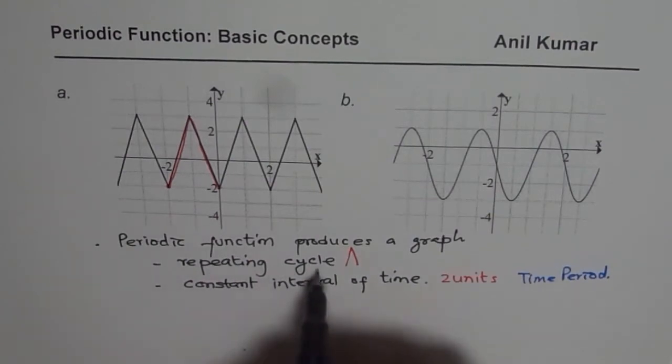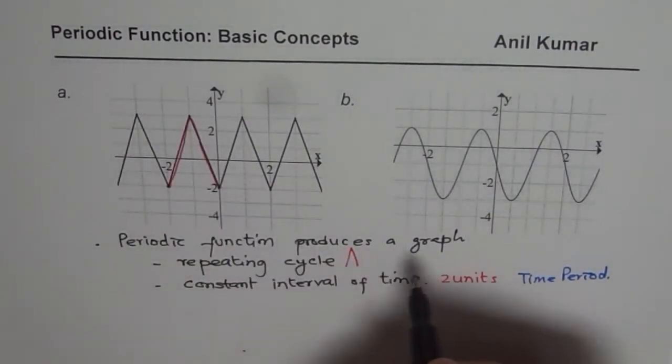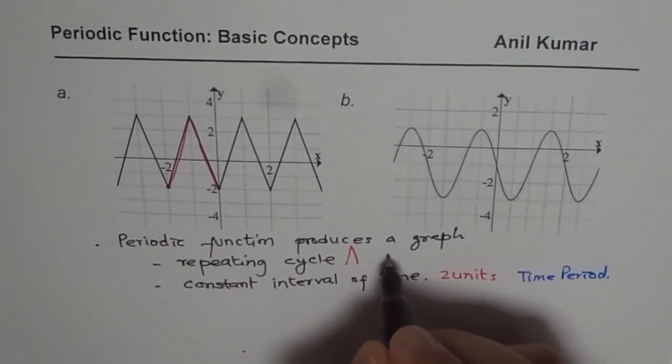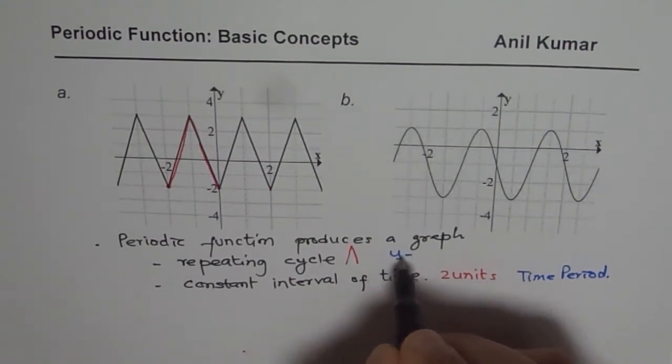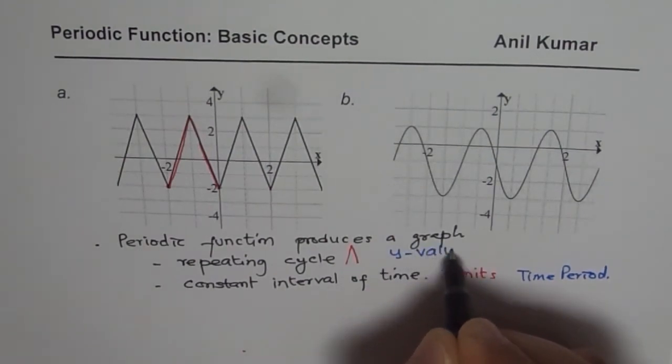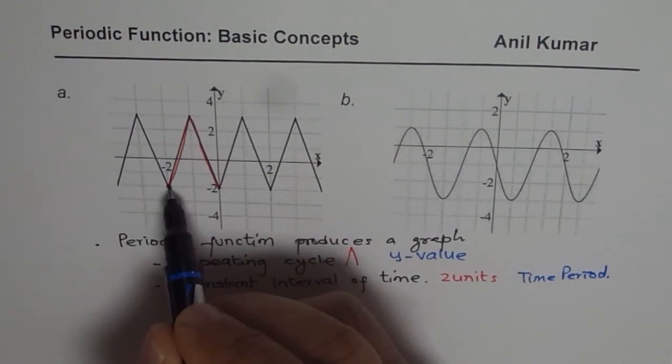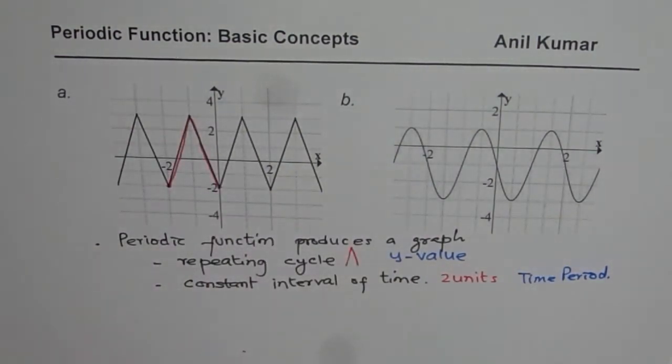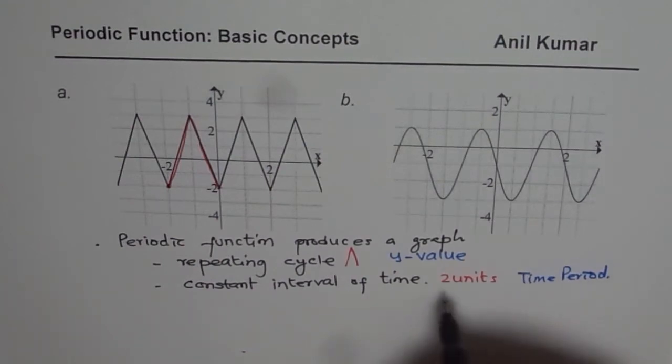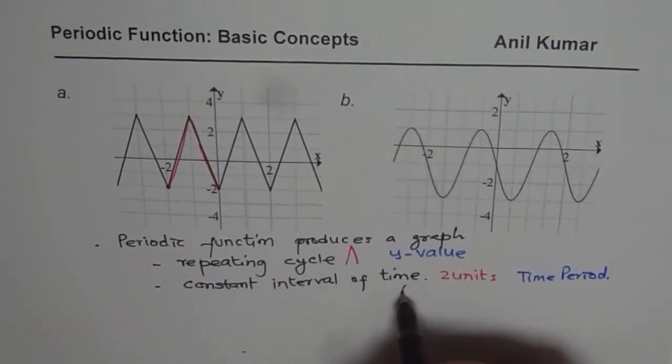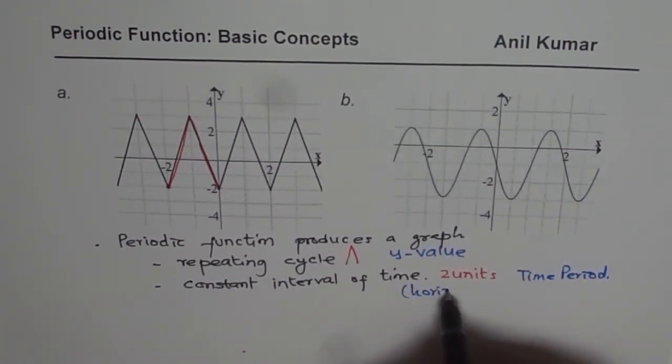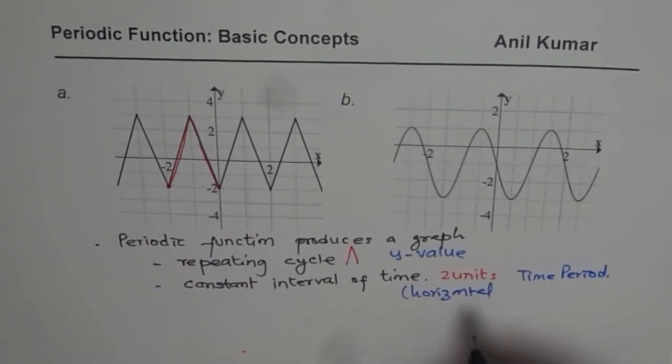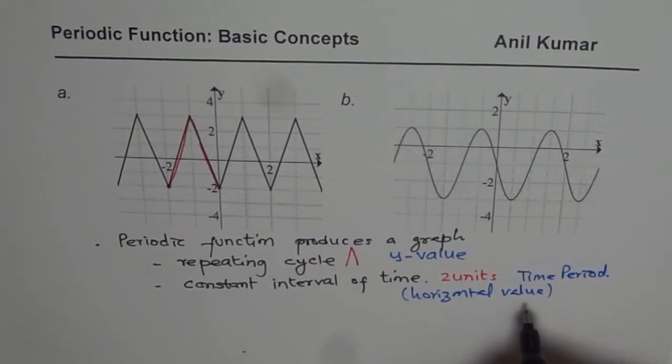And this repeating cycle, when we are saying, we are interested in the y values. So y values are important. When we are saying repeating cycle, how the value of function is changing with time. And when we say time period, then we are actually interested in the horizontal value, the value of the independent variable.